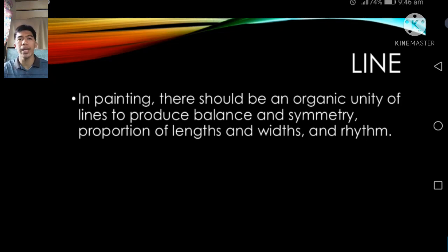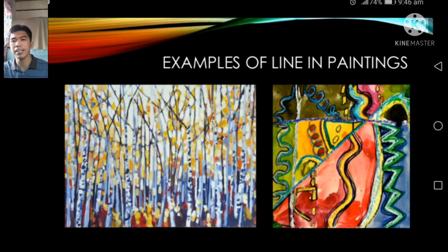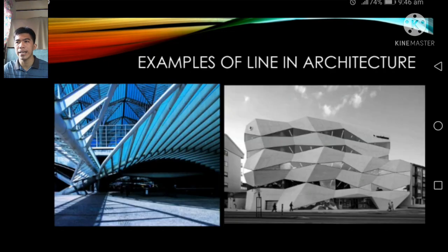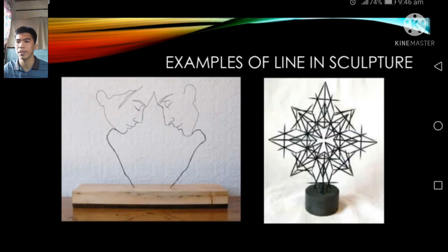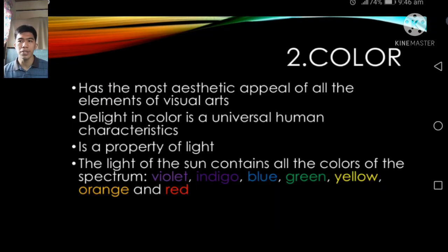Here are examples of line in paintings, in architecture, and in sculpture. Now let's proceed to color.